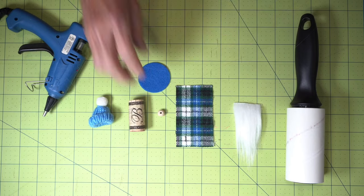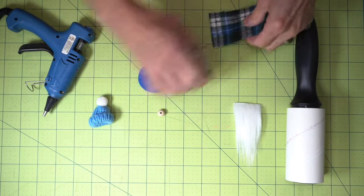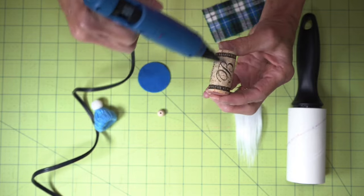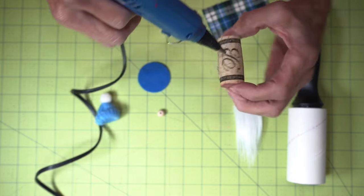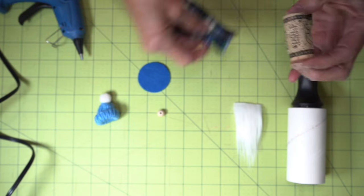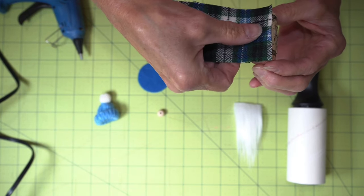Okay, let's get started. First of all, we're going to take our fabric and we are going to glue it to our cork. And I'm just going to run a bead around the cork of hot glue and then I am just going to glue this baby on.